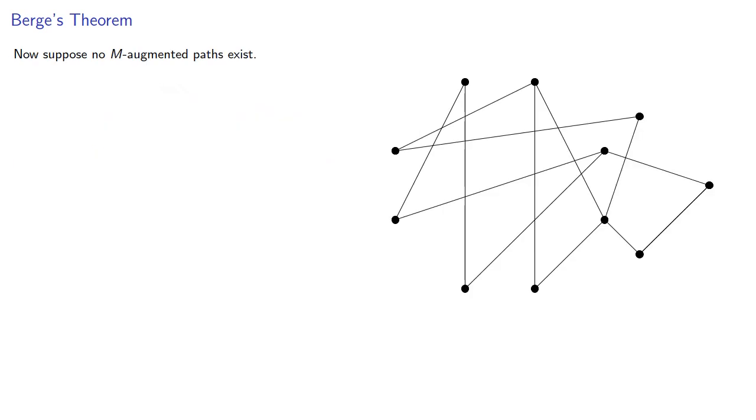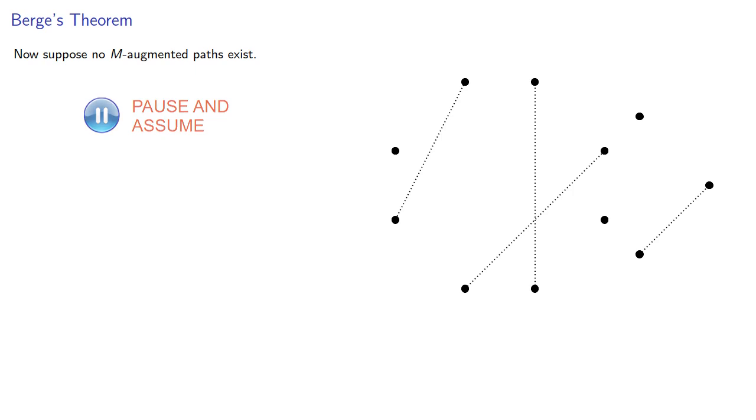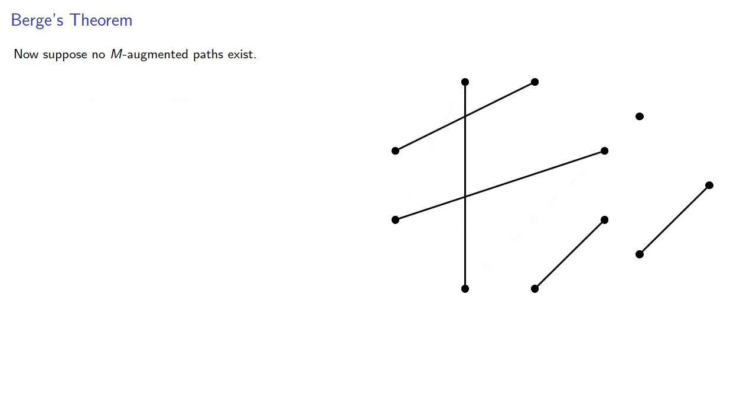So suppose our graph has matching M, and also suppose that no M-augmented paths exist. Suppose N is a larger matching, in other words, it has more edges.